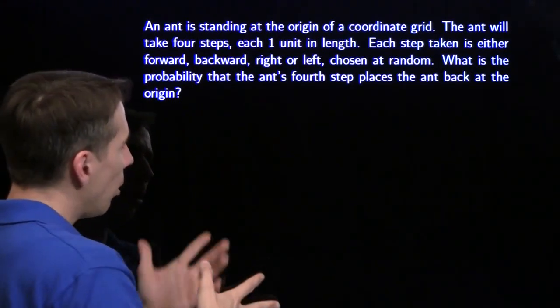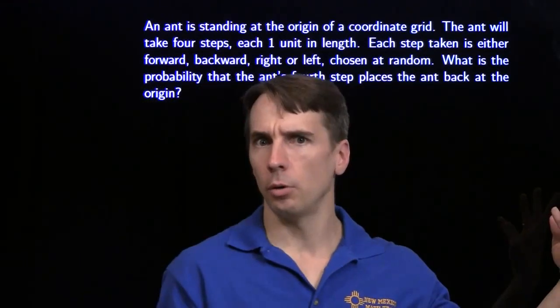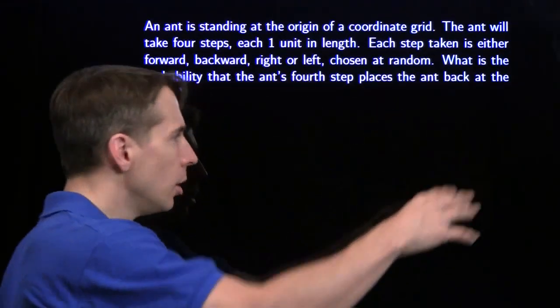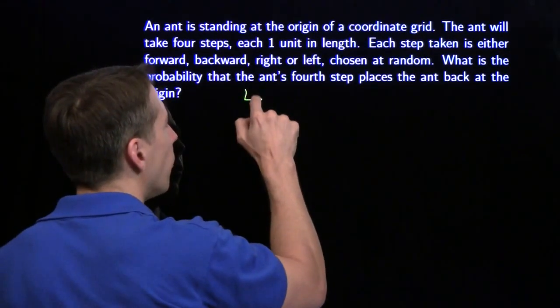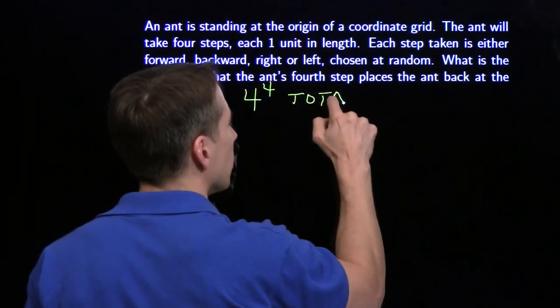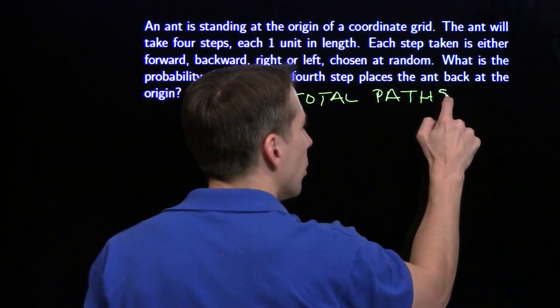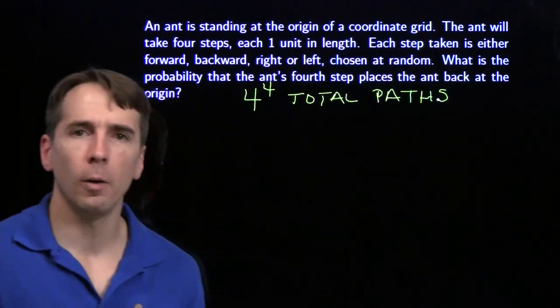Well, overall, the ant can take those 4 steps in 4 times 4 times 4 times 4 ways. There are 4 choices for each of the steps. There's 4 to the 4th total paths. We want to figure out how many of these will bring the ant back home.